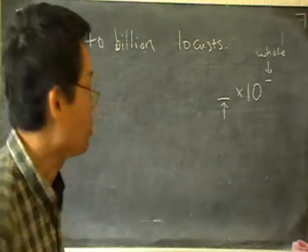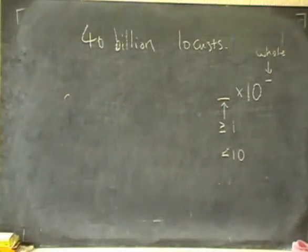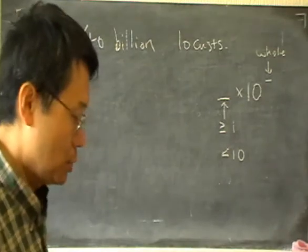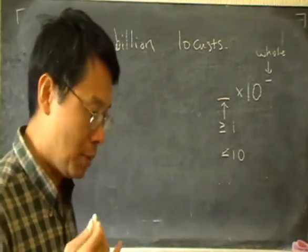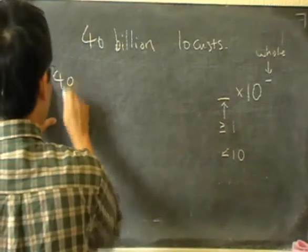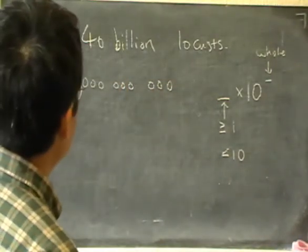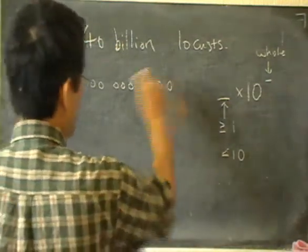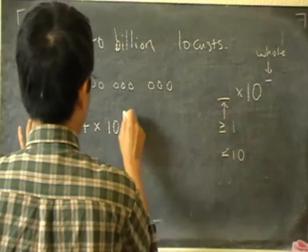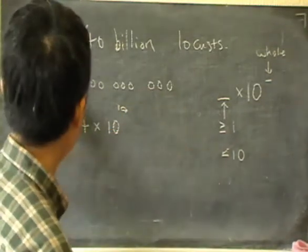In standard form, the factor in front must be greater than or equal to 1 and less than 10. First we write out the billion as a number: a thousand has three zeros, a million has six zeros, so a billion has nine zeros. So 40 billion is 4 followed by ten zeros. Each zero is a factor of 10, so this gives 4 times 10 to the power of 10.